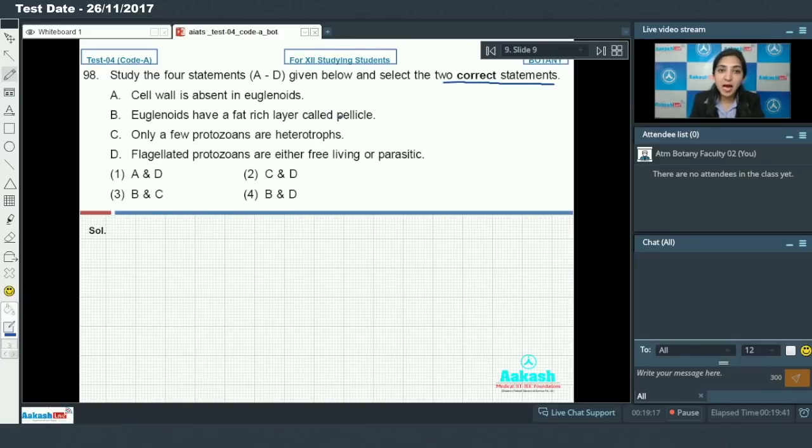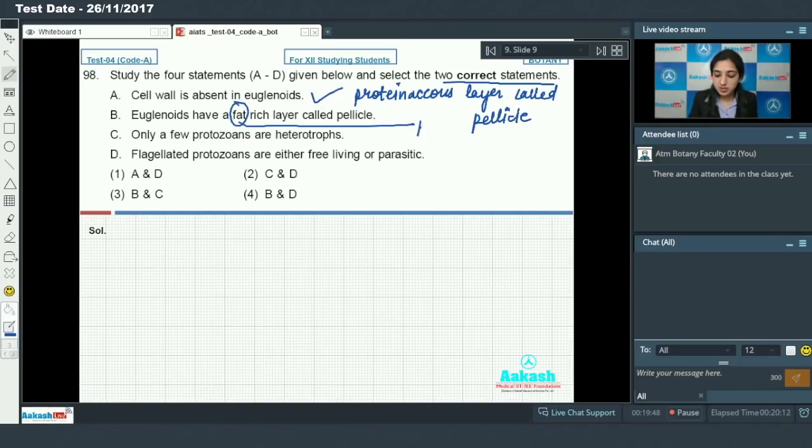Cell wall is absent in euglenoids. This is correct. Euglenoids have a proteinaceous layer called pellicle which provides flexibility to the body of euglenoids. So cell wall is absent. This is correct. Euglenoids have a fat rich layer called pellicle. No. We just discussed that it is protein rich.